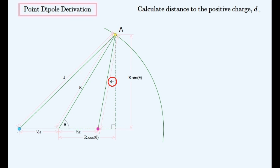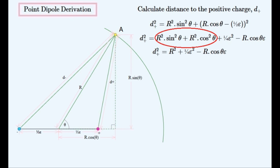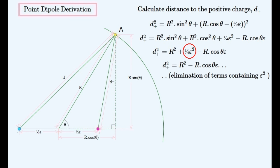We'll start with the distance D+. From the diagram, we can see what D plus squared is equal to using Pythagoras' rule. Then we have to expand the squared expression in brackets, and we can gather these terms together using trigonometric rules. Because epsilon tends to zero, we can eliminate any term that contains epsilon squared or any higher power of epsilon. This really helps to simplify the math, and square rooting this expression gives us D plus.